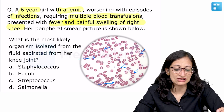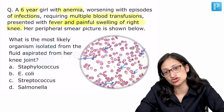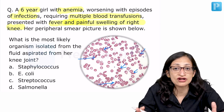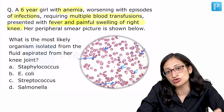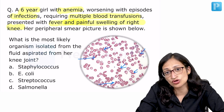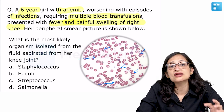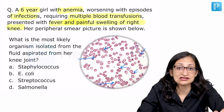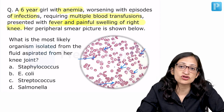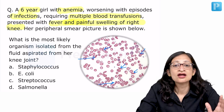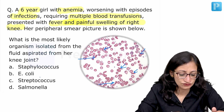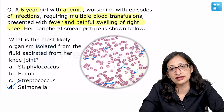What is the most likely organism isolated from the fluid aspirated from the knee joint? The case scenario — fever and painful swelling of the knee — suggests osteomyelitis or septic arthritis. In a child with sickle cell disease, the most common organism responsible for osteomyelitis is Salmonella, whereas in children without sickle cell disease it is Staphylococcus aureus. So Salmonella is the best answer from the given options.